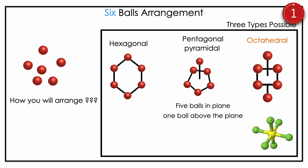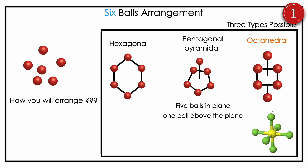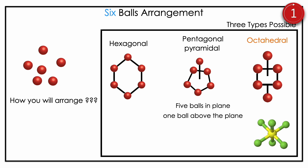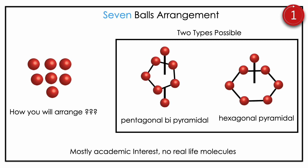Then six atoms — most common among complexes and higher-end molecules. Simple hexagonal arrangement means six atoms on the plane; pentagonal pyramidal means five atoms on the plane with one above. Octahedral means four atoms on the plane, one above, one below — that is the stable arrangement and most often comes in our complexes. Then seven, which is mostly hypothetical — real-life molecules are rare. Seven means pentagonal bipyramidal (pentagon below and one atom above) and hexagonal pyramidal (six atoms in plane, one atom above). These are all hypothetical — you should know that.